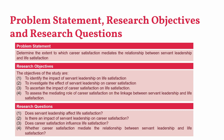Moving from research objectives, how do you draft research questions? Simply change each objective into the form of a question. The first: 'Does servant leadership affect life satisfaction?' The second: 'Is there an impact of servant leadership on career satisfaction?' The third: 'Does career satisfaction influence life satisfaction?' And finally: 'Whether career satisfaction mediates the relationship between servant leadership and life satisfaction?' Once you answer these questions, your objectives will be achieved, and once those objectives are achieved, your problem will be solved. This is the relationship between a problem statement, research objectives, and research questions.